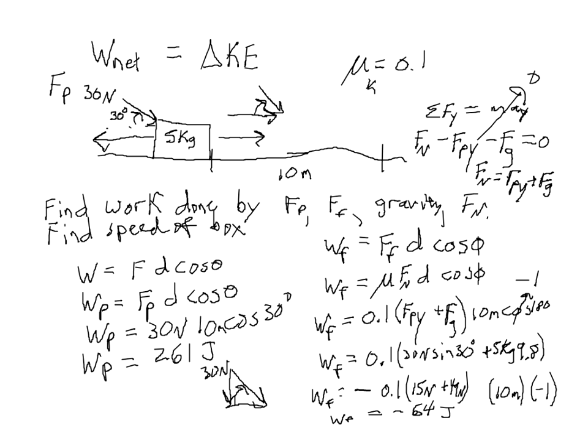The work due to friction is negative 64 joules. The negative sign means friction is removing energy from the system, while the push was adding energy — that's why one is positive and the other is negative. Now for gravity and the normal force: gravity acts straight down while displacement is horizontal, so there's a 90-degree angle between them — cosine of 90 is zero, so gravity does no work. Similarly, the normal force is upward and displacement is to the right — also 90 degrees — so the normal force does no work either. Both are zero.